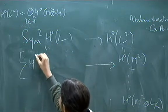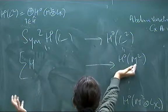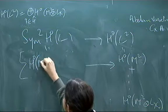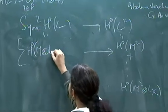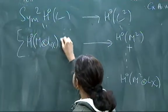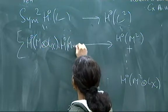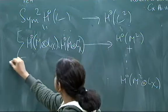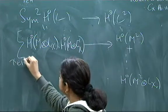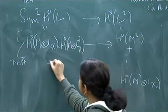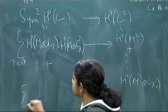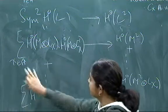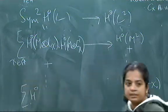Here you have, so the component which gets mapped to this H^0 M square is precisely going to be H^0 of M tensor L_chi times H^0 of M tensor L_chi inverse. And here actually, you will fix one chi here and vary the other chis here.